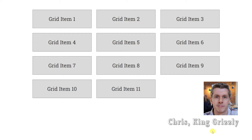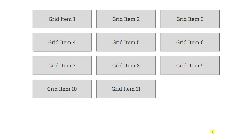Hey everyone, it's Chris with King Grizzly. If you've used Elementor's Loop Grid widget you'll know that it's a really effective way of displaying your dynamic content. All you do is create some posts or maybe some custom posts with a custom post type, you build a loop item template that styles how you want one of those posts to look, and then you can just drop a loop grid widget onto your page and pull in all of your content dynamically into a nice grid layout.